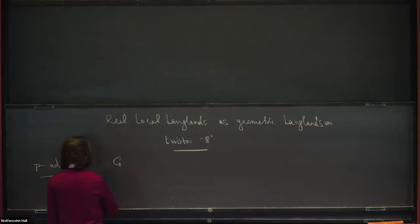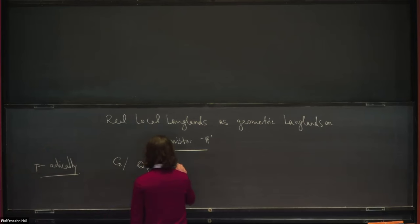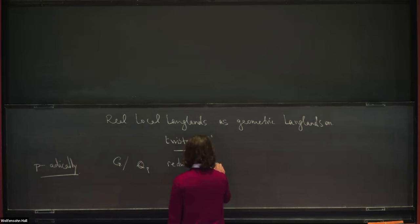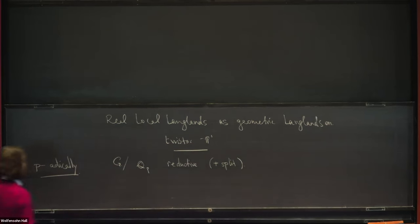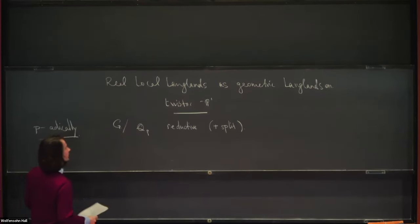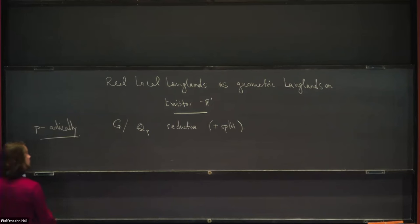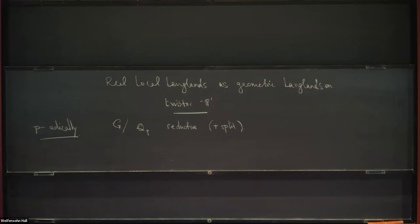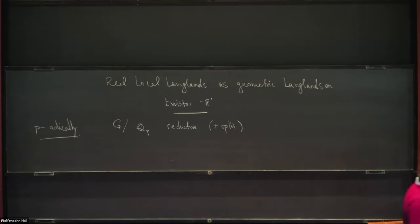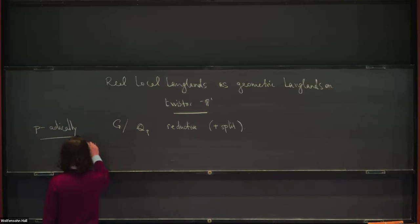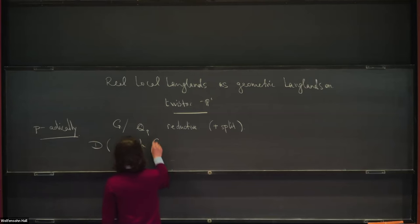In the Langlands program, you're interested in representations of some reductive group—let's pick one over Q_p, and assume it's split. Classically, the local Langlands correspondence seeks to give a parameterization of the irreducible representations of the locally profinite group G(Q_p) in terms of L-parameters. More recently, it was realized you could hope to not just parameterize the irreducible objects, but really describe the whole category in Langlands dual terms. To get a clean statement, you pass to derived categories and look at the category of smooth representations of your p-adic group.